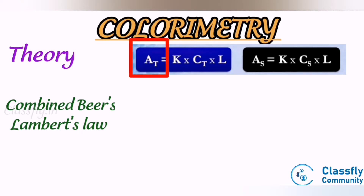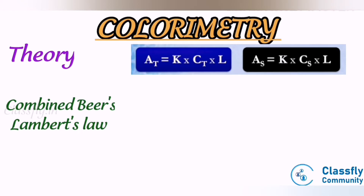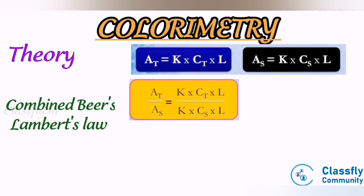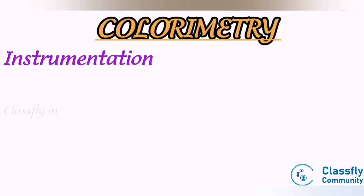Let At = absorbance of test solution, Ct = concentration of test solution, As = absorbance of standard solution, Cs = concentration of standard solution. Calculating the equation At/As, substituting the above equations we get: At/As = (K × Ct × l) / (K × Cs × l), so At/As = Ct/Cs, therefore Ct = (At/As) × Cs.